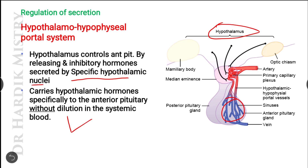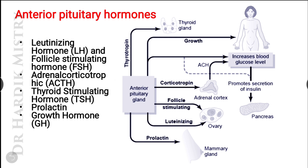The hypothalamo-hypophysial portal system is a closed system. Whatever releasing and inhibitory hormones are released from the hypothalamus go directly to the anterior pituitary gland. The anterior pituitary hormones include: thyroid stimulating hormone, growth hormone, adrenocorticotropic hormone, follicle stimulating hormone, luteinizing hormone, and prolactin.